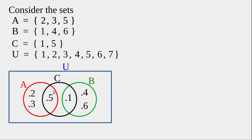This rectangle U represents the universal set, and A, B, C are subsets of U. However, U includes 1 through 7, and 7 has not been placed yet. So we write 7 outside of A, B, and C but inside U — anywhere inside the rectangle but outside the circles.